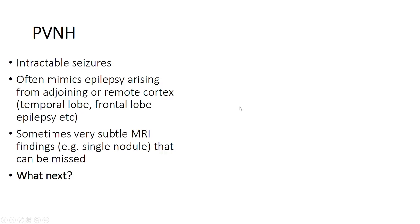In this particular patient, we have the typical phenotype of intractability. We see that her seizures mimic seizures arising from other parts of the brain because the seizures spread from the nodules to those regions. These regions could be adjacent or even far away — in other parts of the temporal lobe or the frontal lobe, for example. It's worth bearing in mind that in patients who have otherwise normal MRI scans, sometimes these nodules can be very subtle, and indeed sometimes a single nodule can be responsible for the patient's epilepsy.